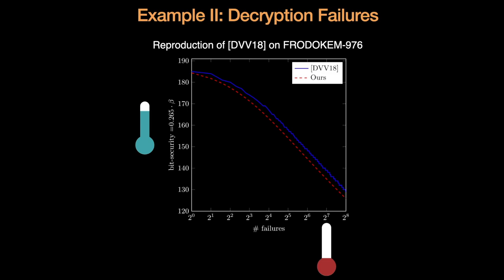In the x-axis, we have the side information, in other words, the number of failures. In the y-axis, we have the amount of work for the attack. The more failures, the easier the attack gets.